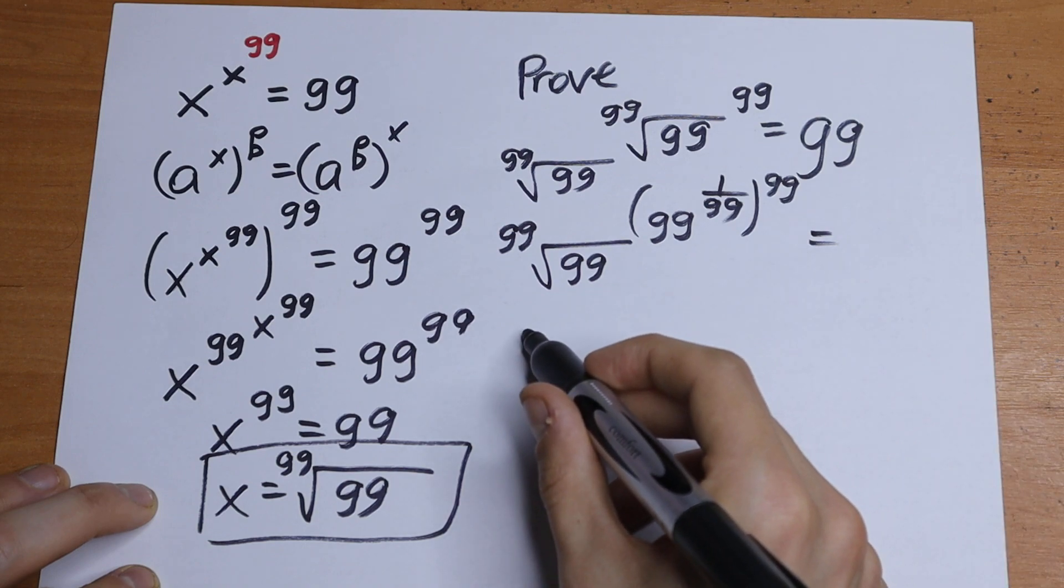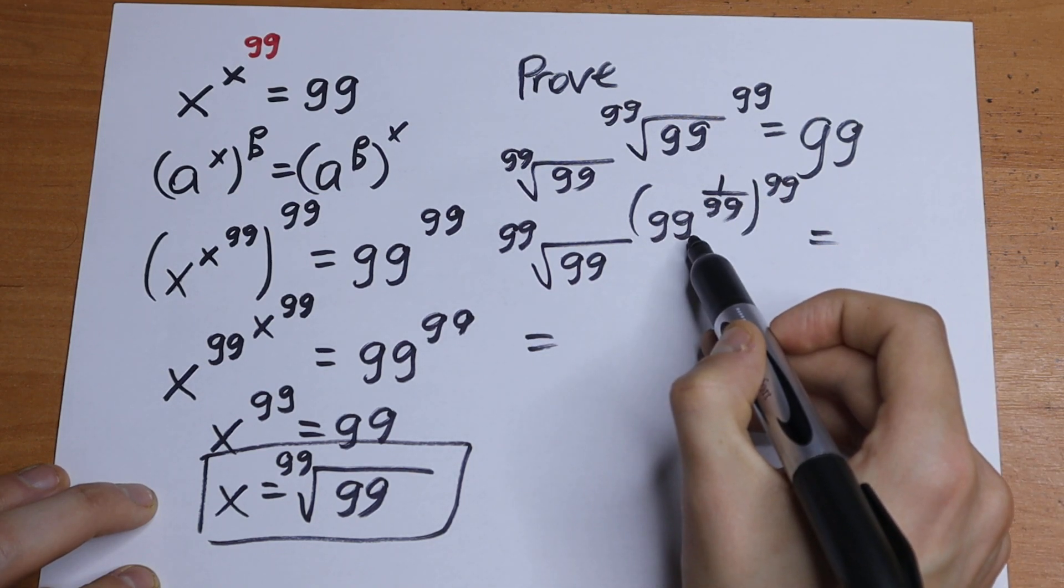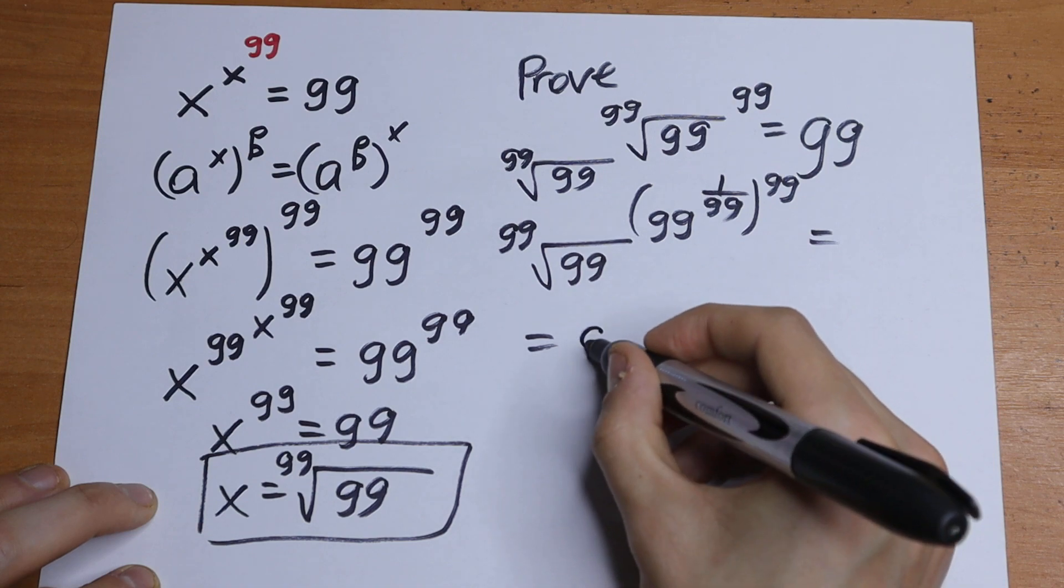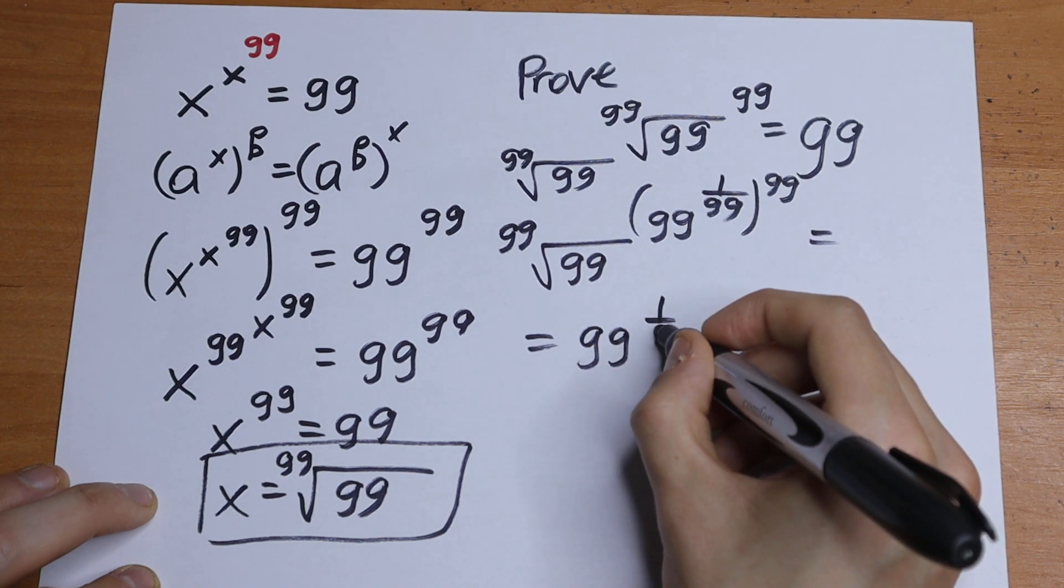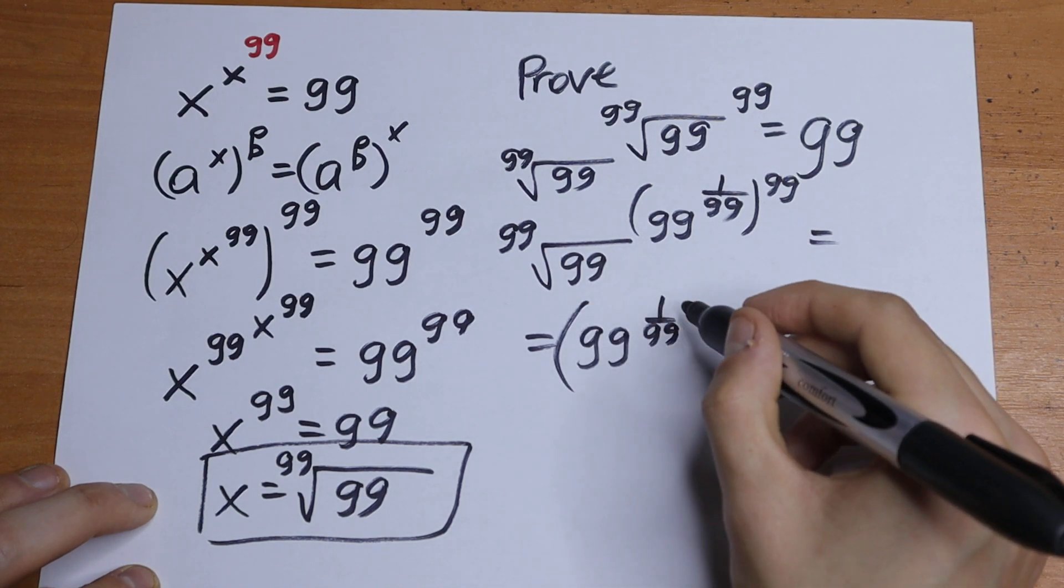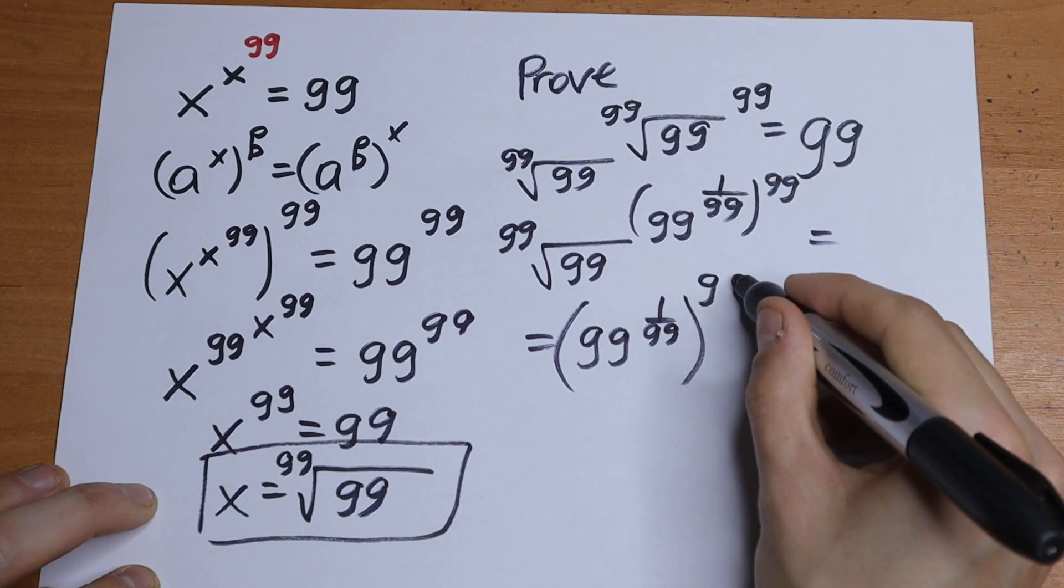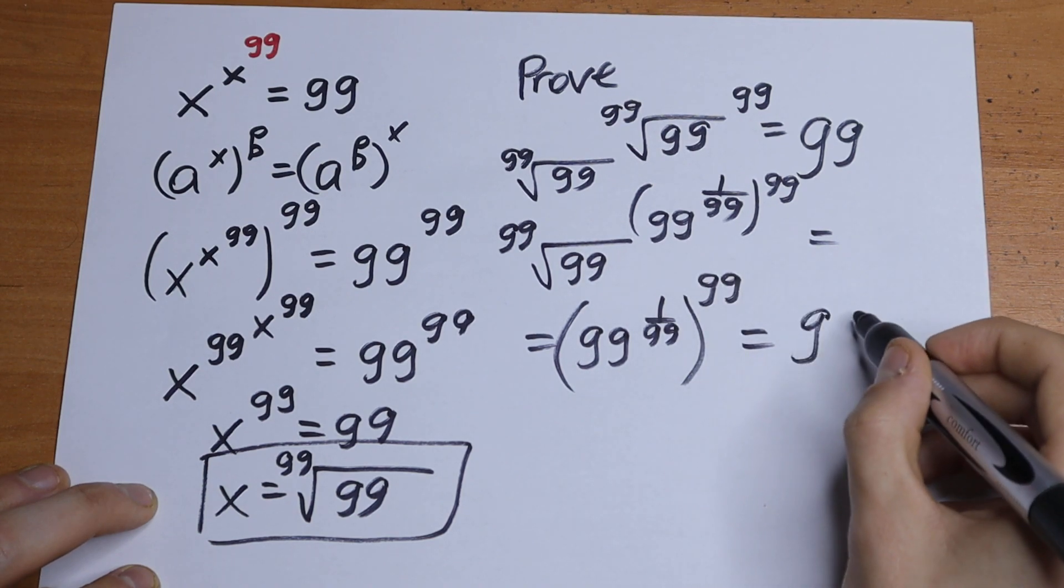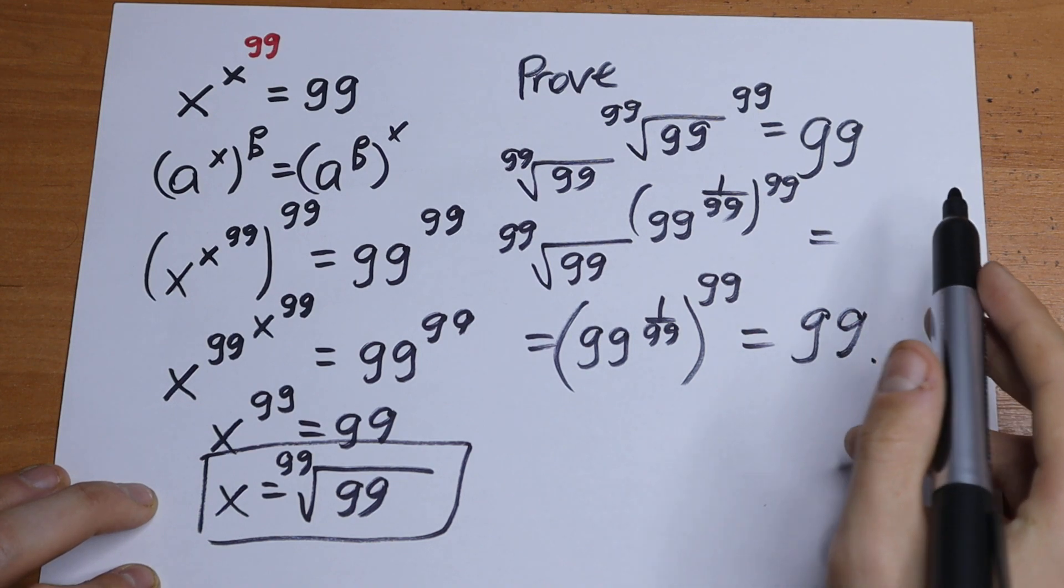The same thing I told before, this will equal 99. The last step, I'll write this 99 as 1 over 99 to the 99th power. And it will equal 99, real quick proof.